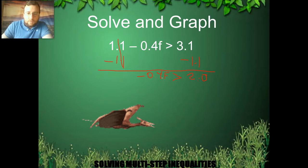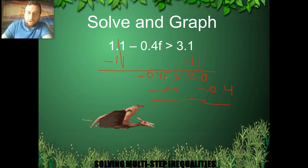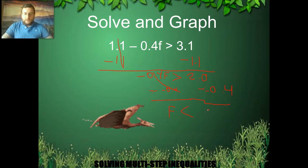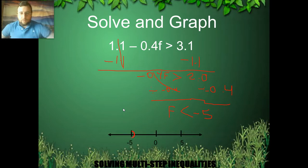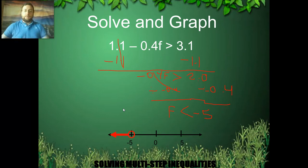Now I have to get rid of the negative 0.4 that's multiplying my variable, so I divide both sides by negative 0.4. The negative 0.4s cancel out on the left, leaving just F. Because I divided by a negative, I must flip the orientation of the inequality sign — now it's smaller than. And 2 divided by 0.4 gives 5, but it's a positive divided by a negative, so it's negative 5. The graphical answer is negative 5 not included, since I'm looking for numbers only smaller than — not smaller than or equal — so I go to the left.